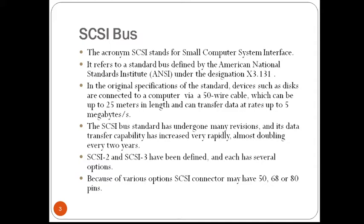The SCSI bus standard has undergone many revisions and its data transfer capability has increased very rapidly, almost doubling every 2 years. SCSI 2 and SCSI 3 have been defined and each has several options. A SCSI bus may have 8 data lines, in which case it is called a narrow bus, and it transfers data 1 byte at a time, that is 1 bit per line.